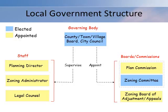At the top of this chart, we have the governing body. The chairperson of the governing body, or if one exists, the county executive, county administrator, or mayor, is responsible for appointing boards, committees, and commissions, and for supervising department heads. In the next few slides, we'll take a look at each of these bodies and how they interact.